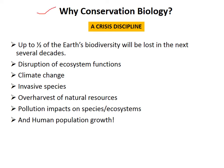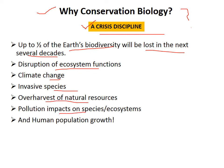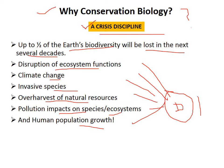Why do we need conservation biology? It is a crisis discipline. The crisis is that 50% of our biological diversity will be lost in the next several decades. The biggest threats include disruption of ecosystem function, climate change, invasive species, over-harvesting of natural resources, and pollution impacts on species, ecosystems, and human populations. To deal with this depletion of natural resources and wildlife, we need conservation biology.